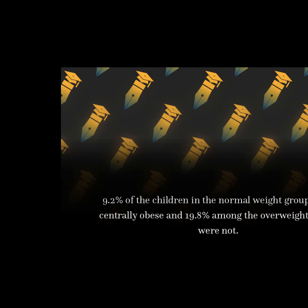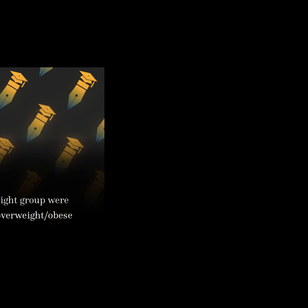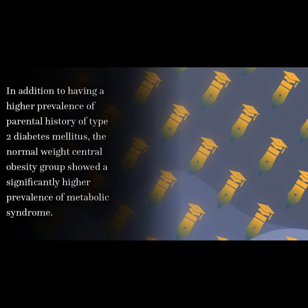9.2% of the children in the normal weight group were centrally obese, and 19.8% among the overweight obese were not. In addition to having a higher prevalence of parental history of type 2 diabetes mellitus, the normal weight central obesity group showed a significantly higher prevalence of metabolic syndrome.